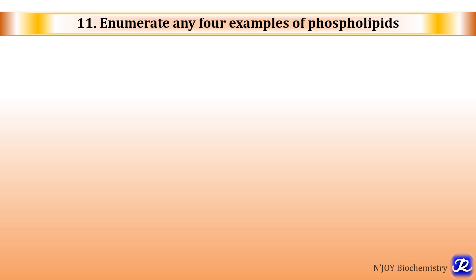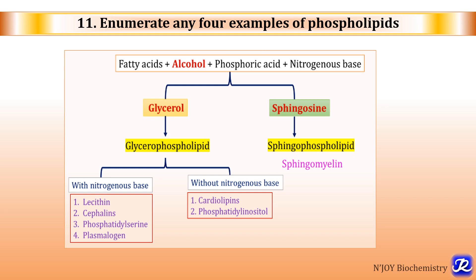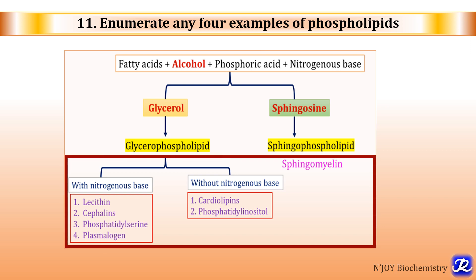Enumerate any four examples of phospholipids. Phospholipids are compound lipids made up of fatty acid, alcohol, phosphoric acid, and a nitrogenous base. They are classified as glycerophospholipids (glycerol as alcohol) or sphingophospholipids (sphingosine as alcohol). Glycerophospholipids with nitrogenous base: lecithin, cephalin, phosphatidylserine, plasmalogen. Glycerophospholipids without nitrogenous base: cardiolipin, phosphatidylinositol. Sphingomyelin is a sphingophospholipid. Any four examples can be enumerated.